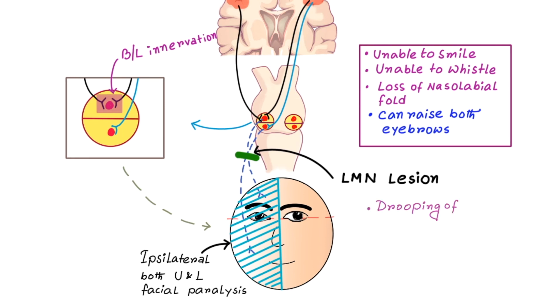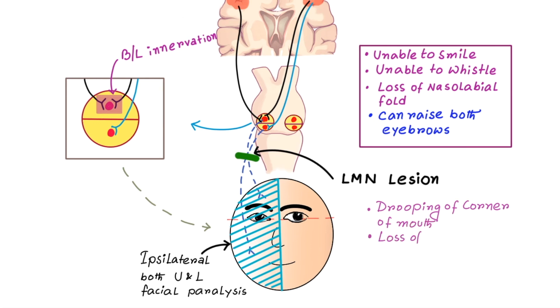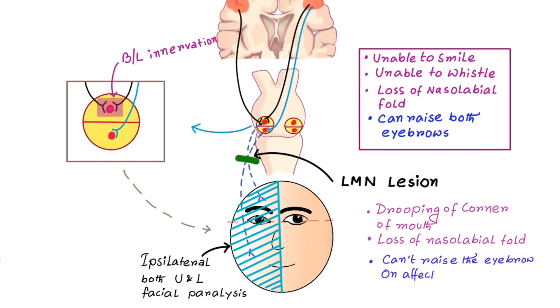Clinical findings would be same as previous like drooping of corner of mouth, loss of nasolabial fold, but the typical feature is inability to raise the eyebrow on affected side and inability to close the eyelid.